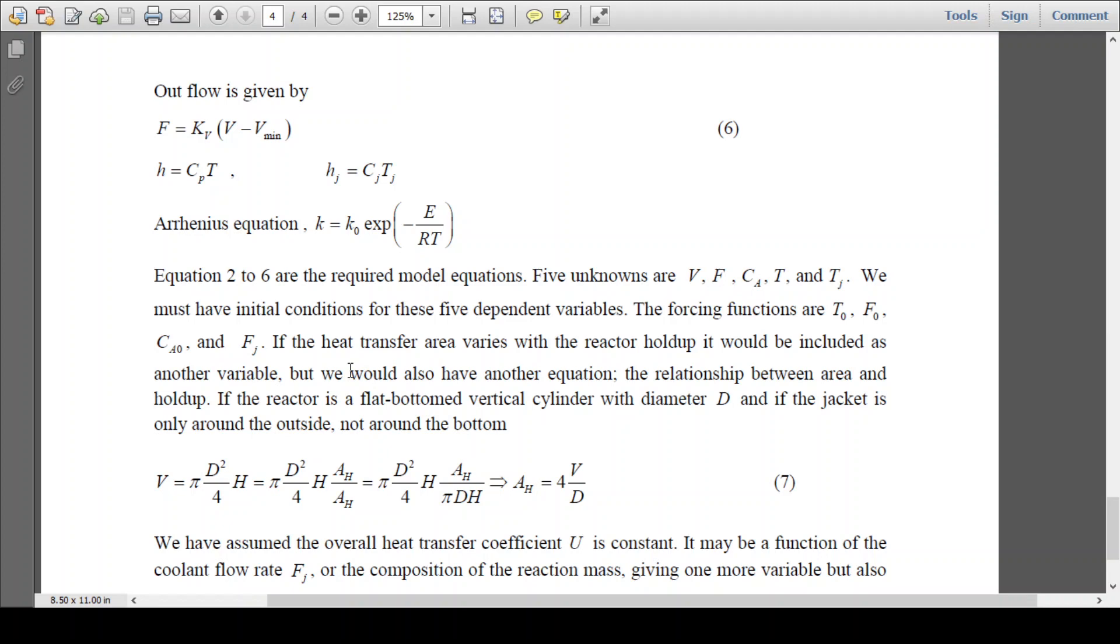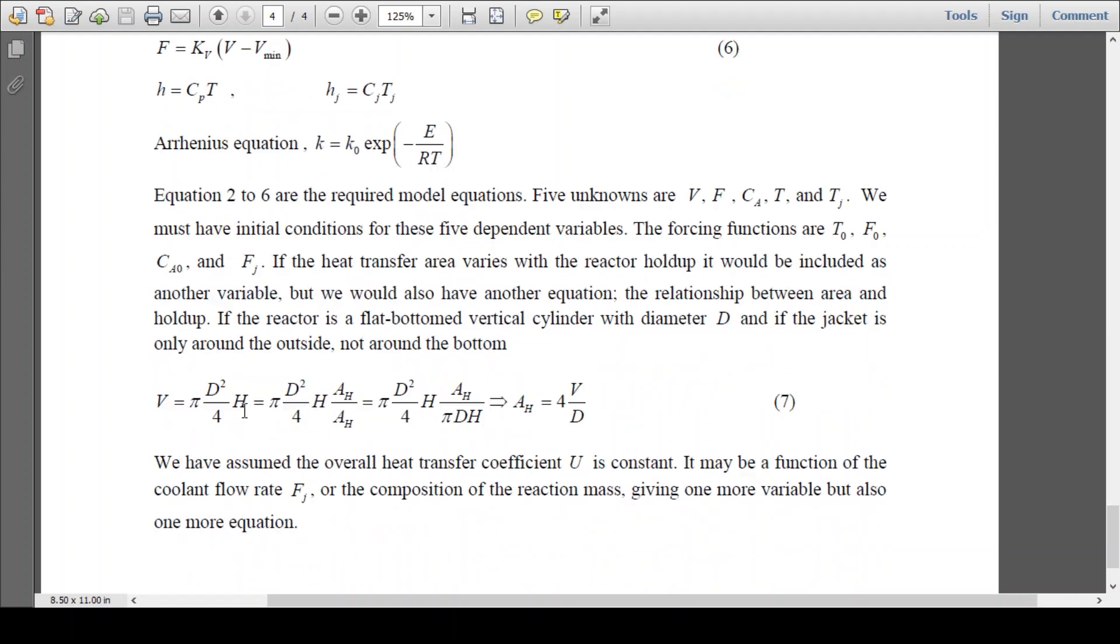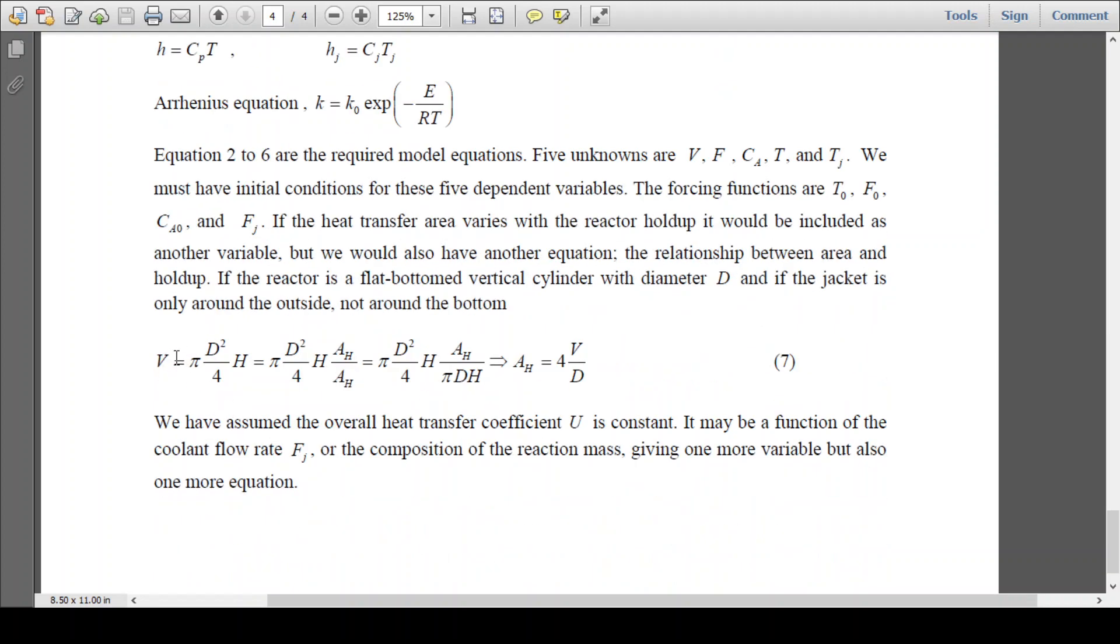As variable holdup inside the reactor, so active area for heat transfer neglecting the flat bottom of the vertical cylinder. So this is the way we are balancing the volume inside the reactor. So this way we are calculating area for heat transfer here. So this way we can calculate all unknown variables by any simulation techniques or ODE45 or MATLAB. Thank you.